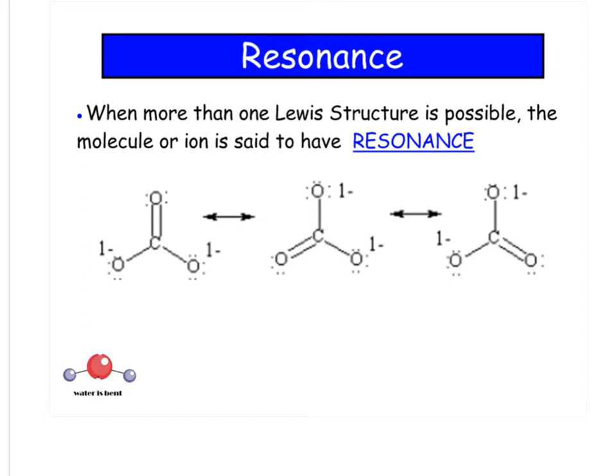Resonance. Sometimes you can have more than one Lewis structure. Here, I put the double bond on that oxygen, but I could have put it here or here. That's what resonance is—just where you put the double bond. And you have to have a multiple bond in order to have resonance.